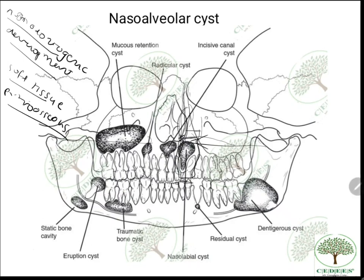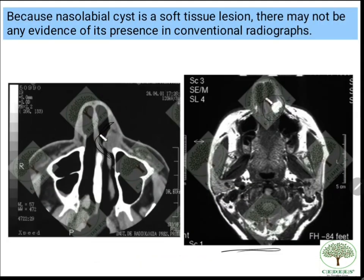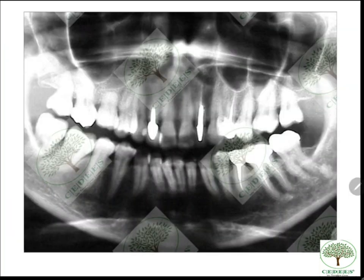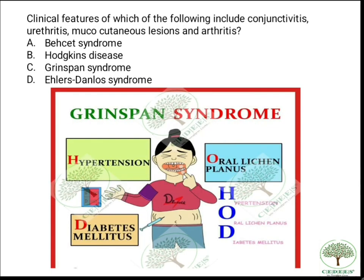Do not confuse the nasolabial cyst with the globulomaxillary cyst, which is also between the lateral incisor and canine and appears as an inverted pear-shaped radiolucency. The nasolabial cyst may appear funnel-shaped or pear-shaped, making them look similar. Aspiration and CT/MRI are needed for further investigation. Also distinguish it from the nasopalatine duct cyst, which appears as a heart-shaped radiolucency between the maxillary central incisors. For nasolabial cyst, MRI or contrast CT is always preferred.